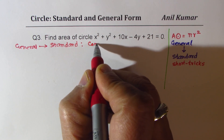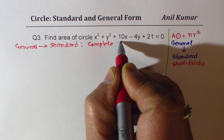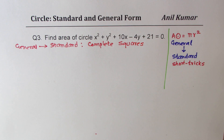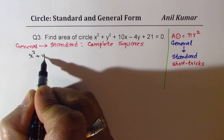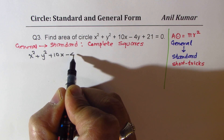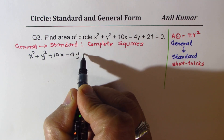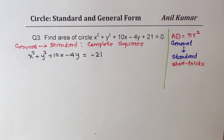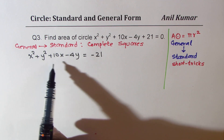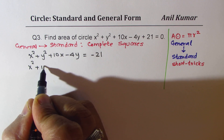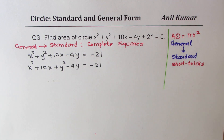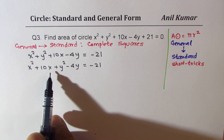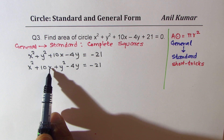The main technique is to complete the square. I'll rewrite the equation: x² + y² + 10x - 4y = -21, moving the constant to the right side. Now let us arrange the x and y terms: (x² + 10x) + (y² - 4y) = -21.